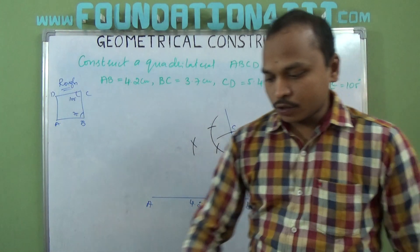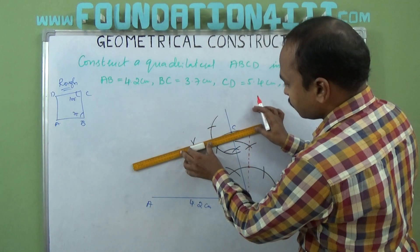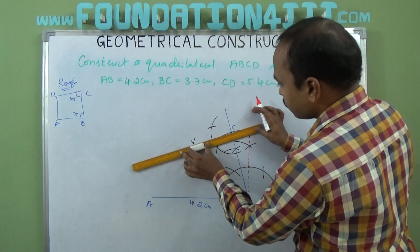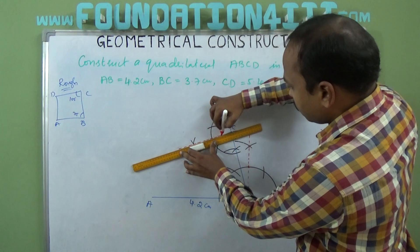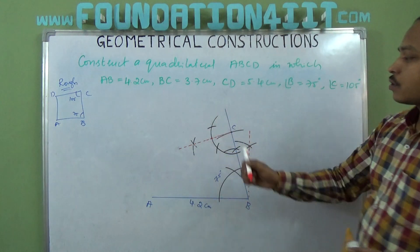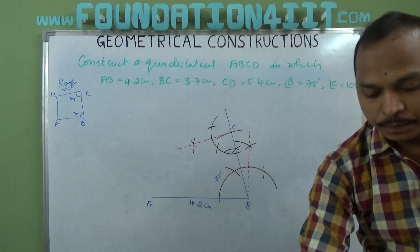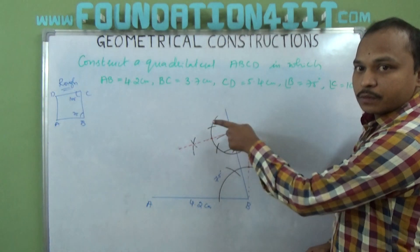Okay, so just join this from the point C. Now this is 90. That is 90. Now 90 and 120, these both you need to bisect.